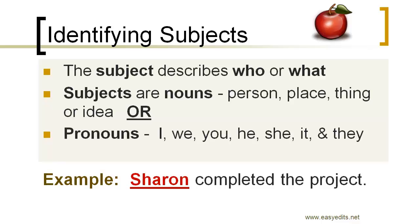Here's an example: 'Sharon completed the project.' In this example, Sharon is the subject because she is the one completing the project. The object is 'project' — the thing being completed. Here's another example: 'She completed the project.' Here you have the pronoun 'she' functioning as the subject of this sentence.